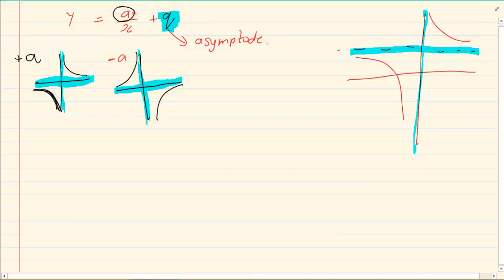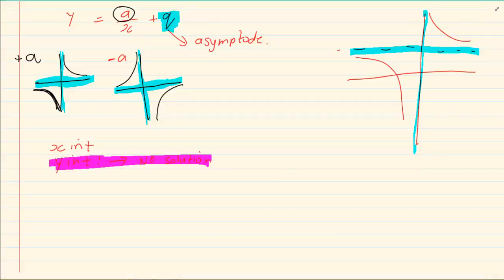Now the next thing is x. So we know what our q does. We know what our a does. You are still going to do x-intercept. And you are still going to do y-intercept. Now y-intercept means x is zero. But look, if you look, it's always going to be an asymptote. So for this one, you're not going to get a solution. However, that is only for grade 10. In grade 11, this rule changes.